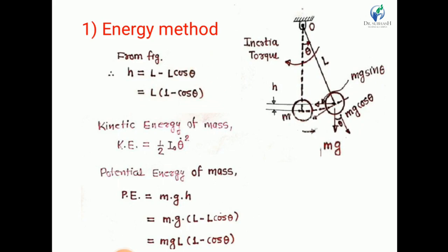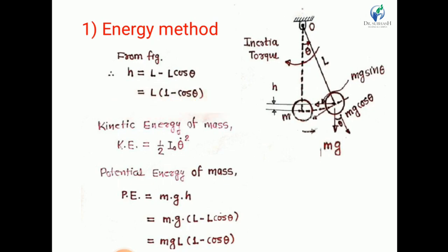We know the equation of kinetic energy is ½mv², but here we consider rotational kinetic energy because the pendulum is oscillating rotationally. So the rotational kinetic energy is ½·IO·θ̇², where θ̇ is the angular velocity. Similarly, the potential energy is mgh, and in our case h = L(1 − cosθ), so the potential energy is mgL(1 − cosθ).